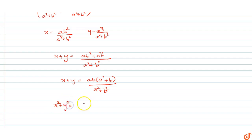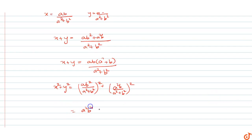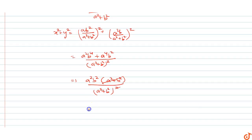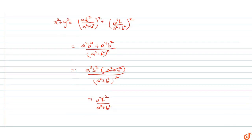Now computing x squared plus y squared: (ab²/(a² + b²))² plus (a²b/(a² + b²))² equals (a²b⁴ plus a⁴b²)/(a² + b²)². Taking a²b² common: a²b²(b² plus a²)/(a² + b²)², which simplifies to a²b²/(a² + b²).